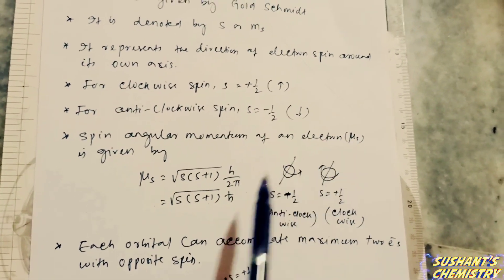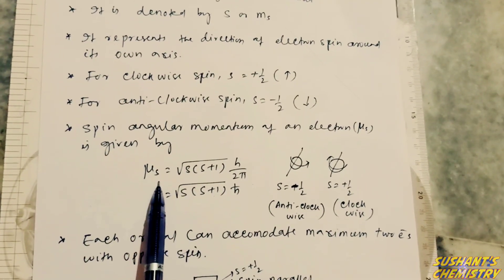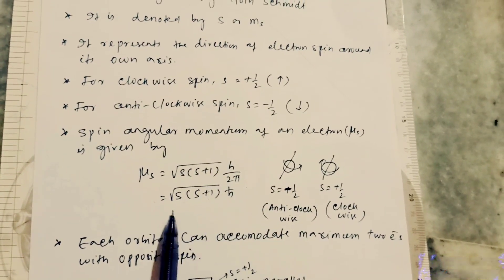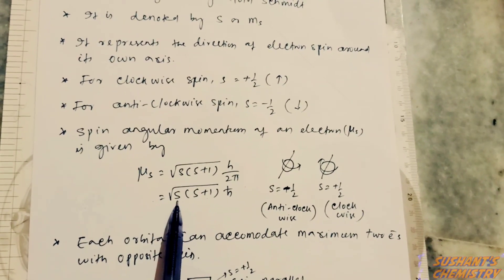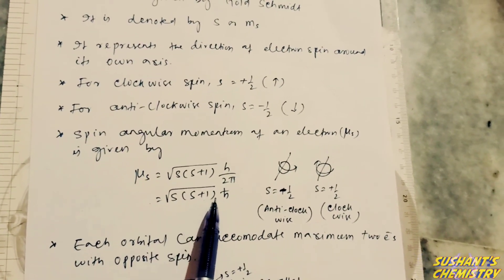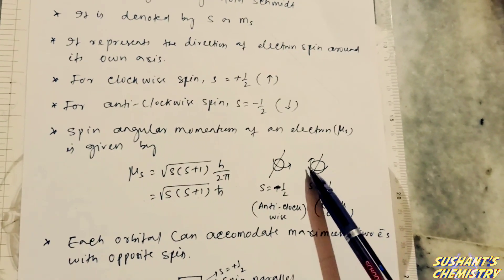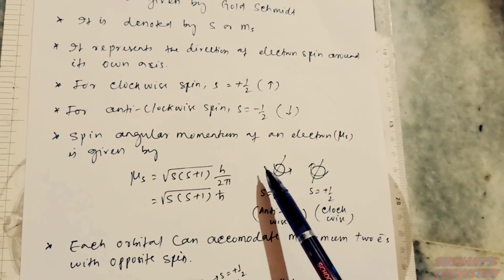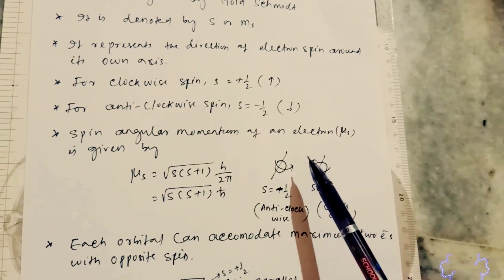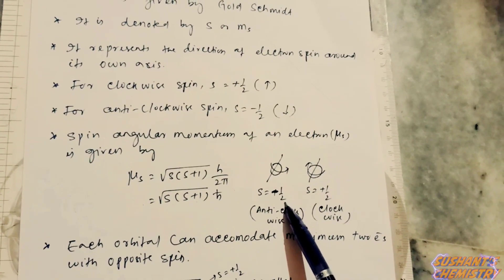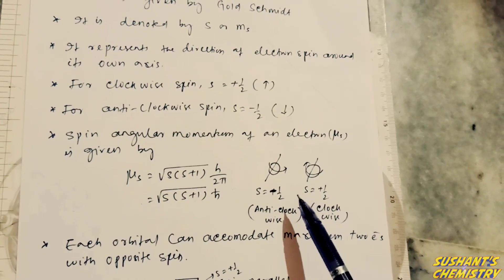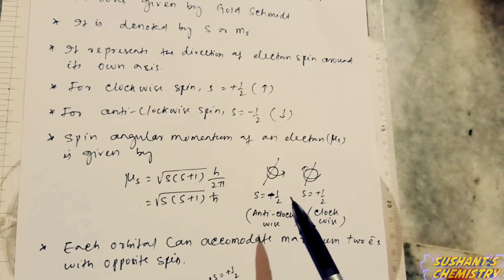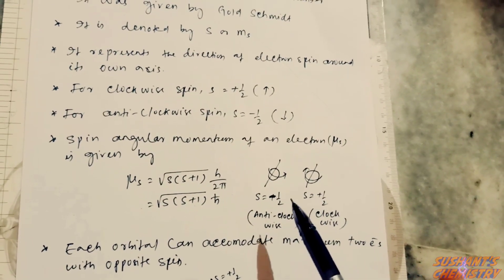The spinning electron produces angular momentum known as spin angular momentum. The spin angular momentum of an electron is given by: mu_s equals root over s(s+1) multiplied by h/2π. For clockwise spin, s equals plus half; for anti-clockwise spin, s equals minus half.